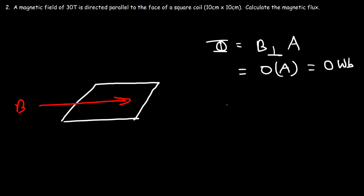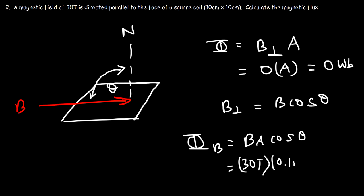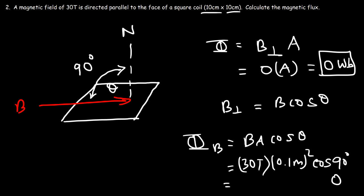The perpendicular component is B cosine θ, so the flux equation can be written as: magnetic flux equals B times A times cosine of θ. Here θ is the angle between the normal line — which is perpendicular to the surface — and the magnetic field vector B. In this example θ is 90°, so we have 30 tesla times an area of 0.10 m² times cosine of 90°. Since cosine of 90° is zero, the flux is zero.